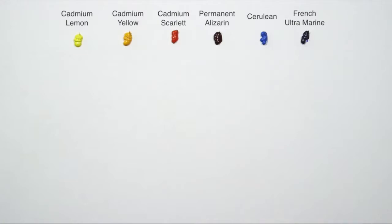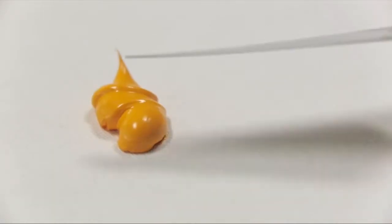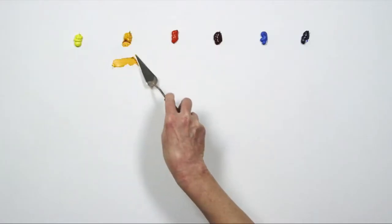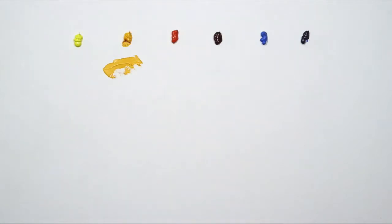Brown is simply a low chroma orange, so I'll first mix an orange using one of the pairs of yellow and red, and then add one of my blues in small amounts.